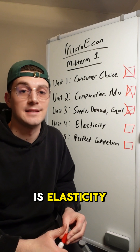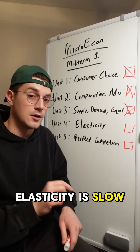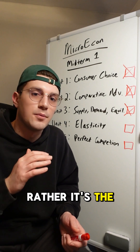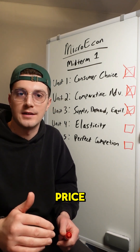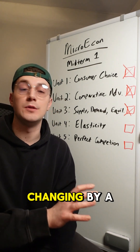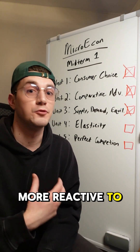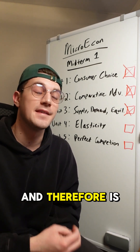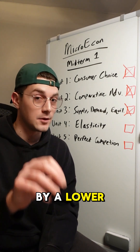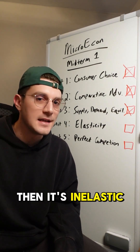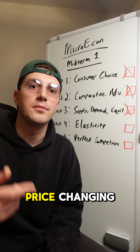Next up is elasticity. Students very commonly make the mistake of thinking that elasticity is slope, but it's not. Rather, it's the percent change in quantity divided by the percent change in price. If quantity is changing by a larger percent than price, that means it's more reactive to changes in price and therefore is elastic. On the flip side, if quantity changes by a lower percent than price, then it's inelastic — we're not as reactive to the price changing.